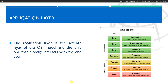The application layer provides a firm communication interface and end-user services, including the Simple Mail Transfer Protocol, file transfer, web surfing, web chat, email clients, network data sharing, virtual terminals, and many file and data operations. It provides full end-user access to a variety of shared network services. This layer has many responsibilities including error handling and recovery, data flow management, and it is also used to develop network-based applications.